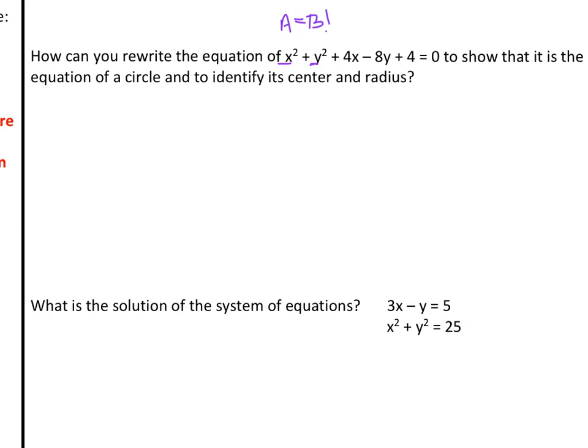The first thing we're going to do is group our x's together: x² + 4x plus, and then I'm going to group my y's together: y² - 8y. And it says move e to the other side, so I'm just going to subtract 4 and set this equal to -4.